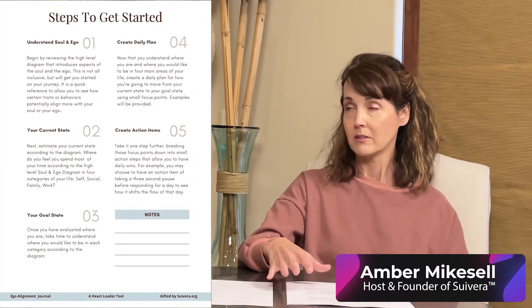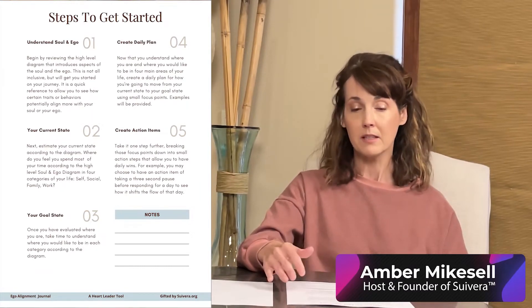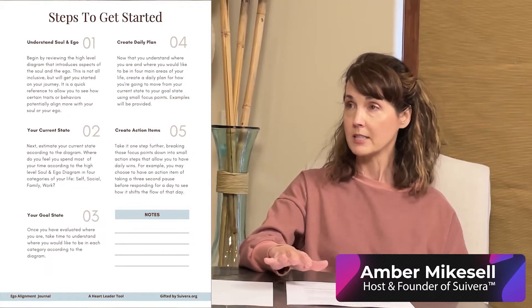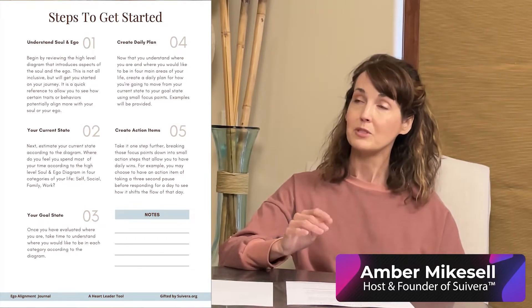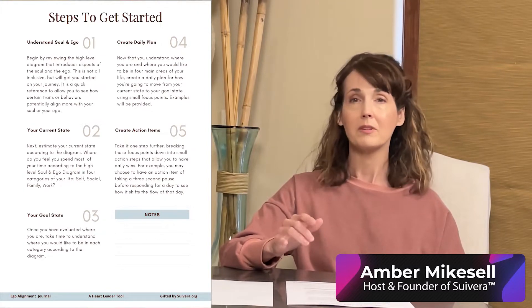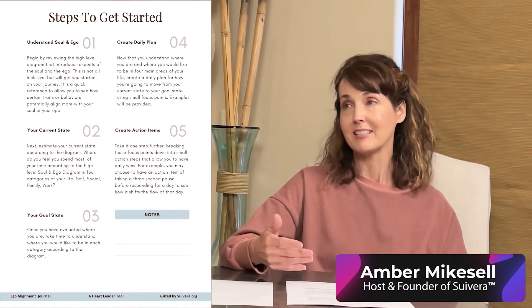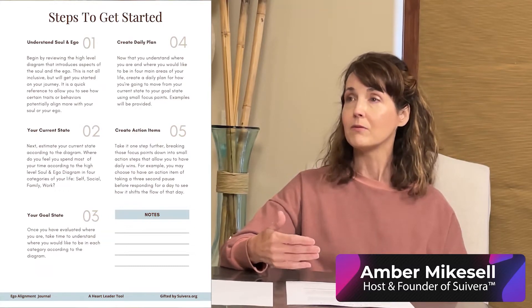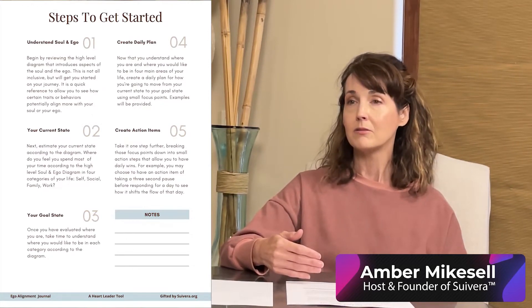When we get to the steps to get started on the journal, it walks you through each and every step. First is that understanding of the soul and the ego. Second is knowing your current state — where are you now in accordance with each of those categories between the soul and the ego? This is where all of those tools around vulnerability and authenticity that you've practiced really come into play, because we have to be willing to be authentic with ourselves.